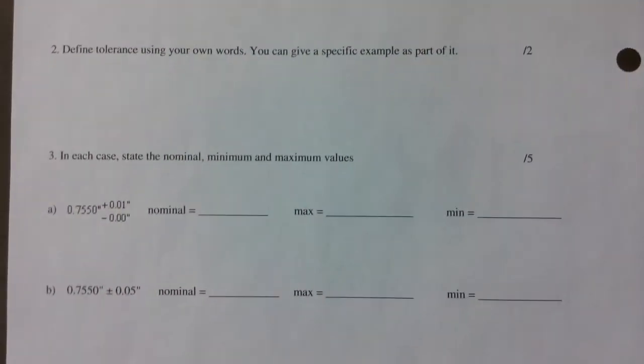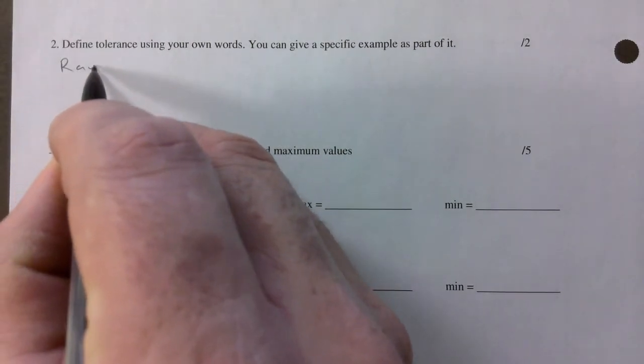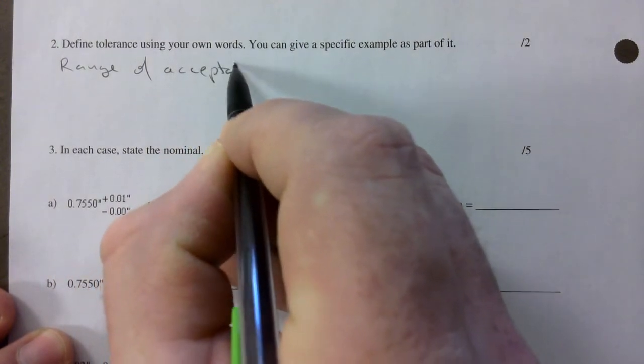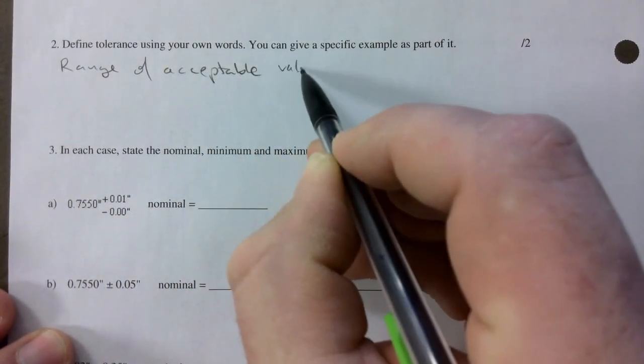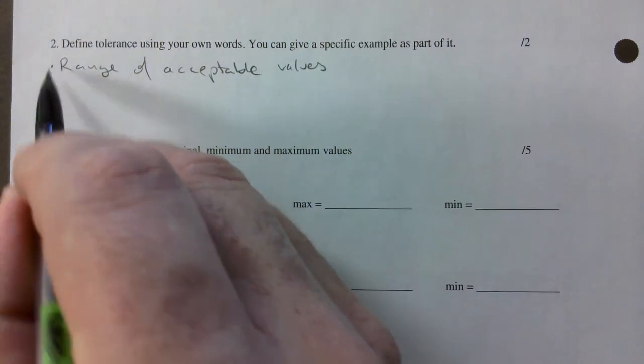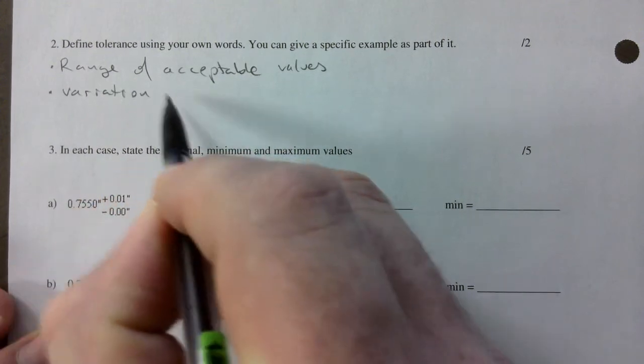Next page: define tolerance using your own words. You can say a range or change of acceptable values. I would also say variation allowed.